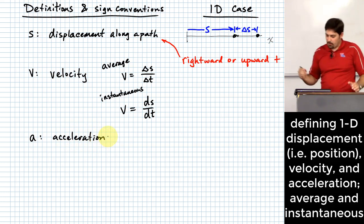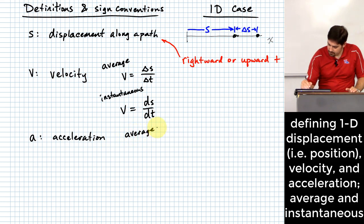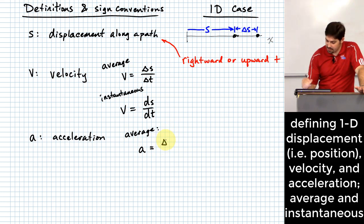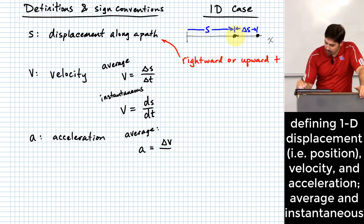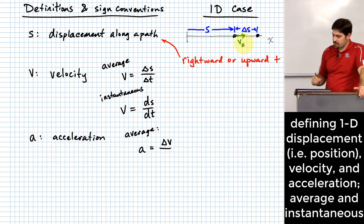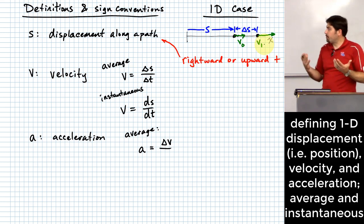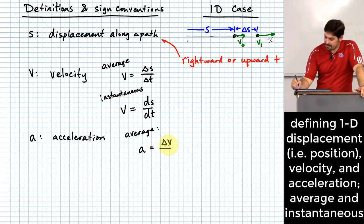What about acceleration? For average acceleration, a is equal to a change in velocity — delta v over delta t. Imagine at this point in time having a particular velocity v sub zero, and then at another point having a different velocity v sub one. There's been a change over that period of time. Taking that change in velocity and dividing by the change in time gives you average acceleration.